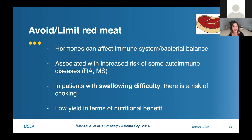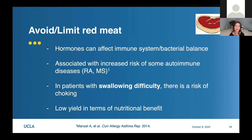Regarding red meat: in the United States, many animals are exposed to hormones and consumption can affect your immune system and bacterial balance. Studies have shown that increased red meat consumption is associated with an increased risk of certain autoimmune diseases such as rheumatoid arthritis and multiple sclerosis. Swallowing can also sometimes be challenging when you have scleroderma, and red meat can sometimes provoke choking. There are many other ways to get the protein you might get from red meat without these side effects.